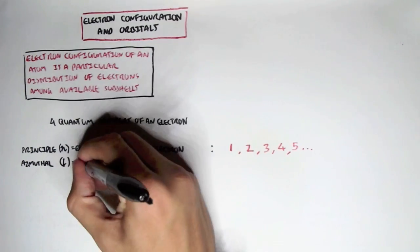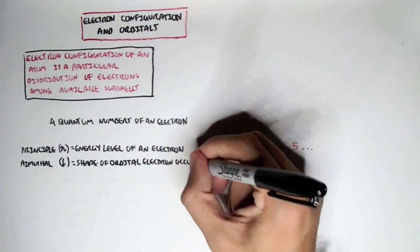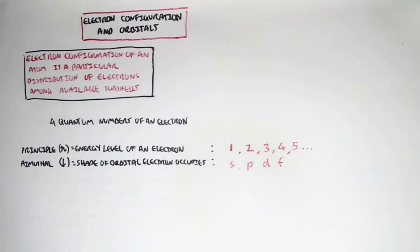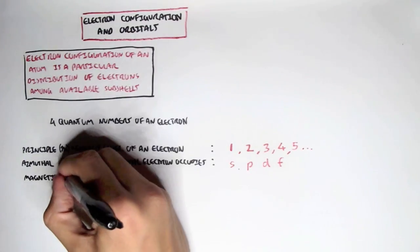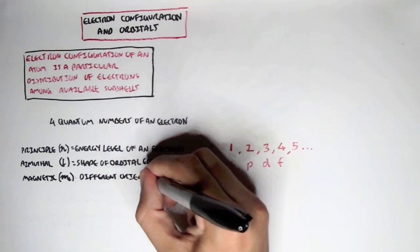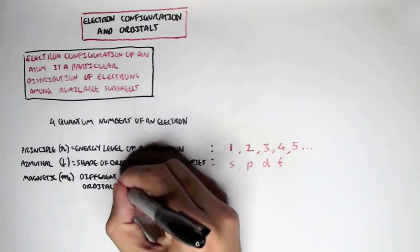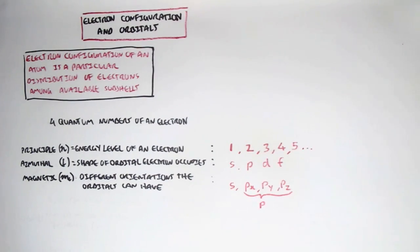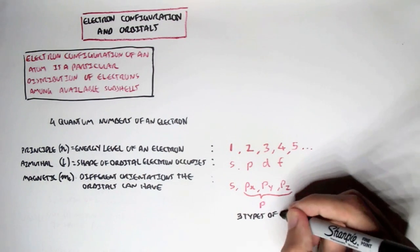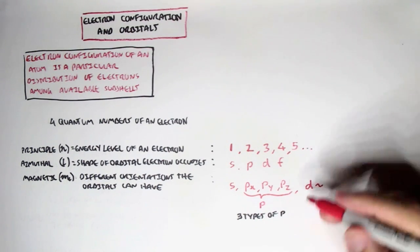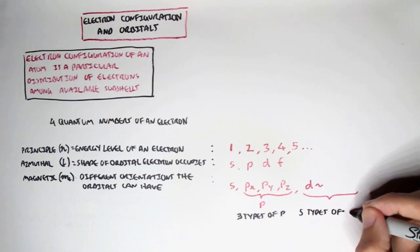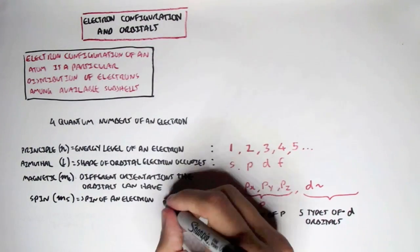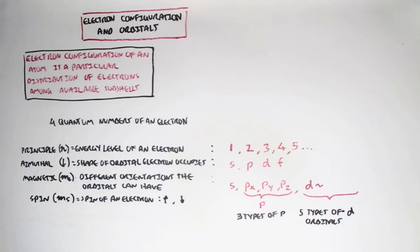Then we have the azimuthal quantum number, L, which defines the shape of the orbitals the electron occupies. This can be S, P, D, or F. Then we have the magnetic quantum number, M with a small L, which tells us the different orientations the subshells can have — giving us 1 S orbital, 3 P orbitals, 5 D orbitals, and so on. We also have the spin quantum number, MS, which tells us the spin of an electron — either spin up or spin down.